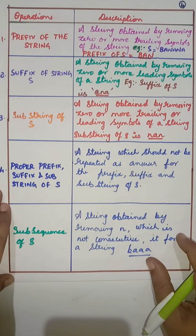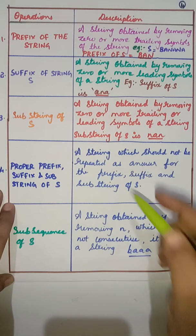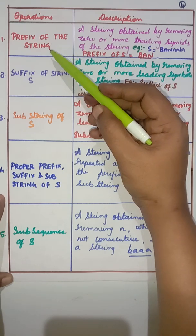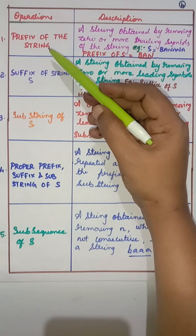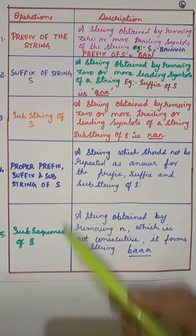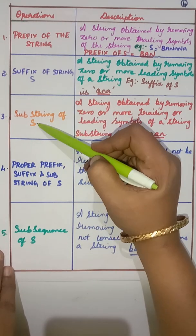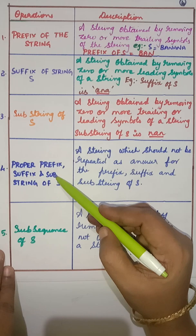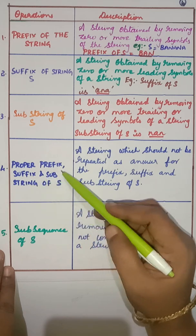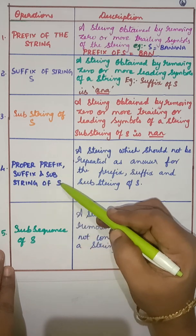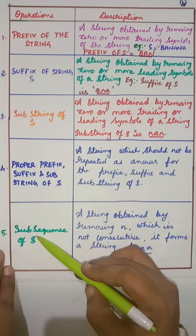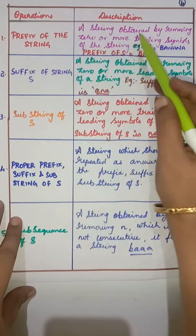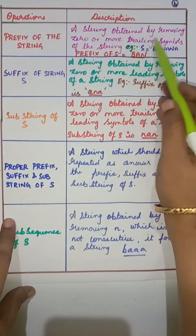What are all the operations that can be performed on a string? There are five different operations: the first one is prefix of the string, the second is suffix of the string, the third is substring of the string, the fourth is identifying proper prefix, suffix, and substring, and the fifth is subsequence of the string.